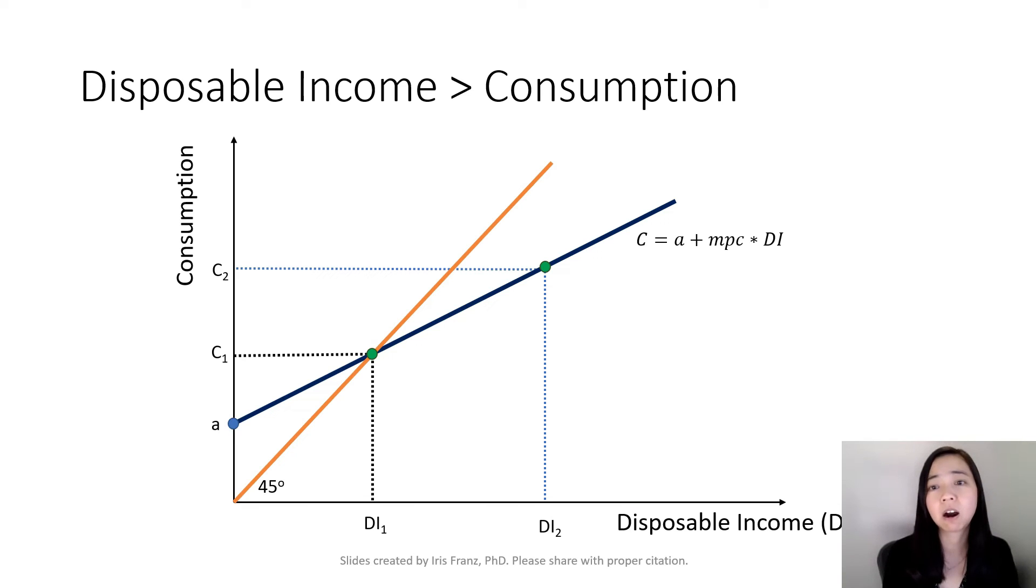Now, suppose we are on a point of the consumption schedule that is away from the 45-degree line. For example, if we are here, we know that because we are not on the 45-degree line, therefore your disposable income DI2 is not equal to C2.